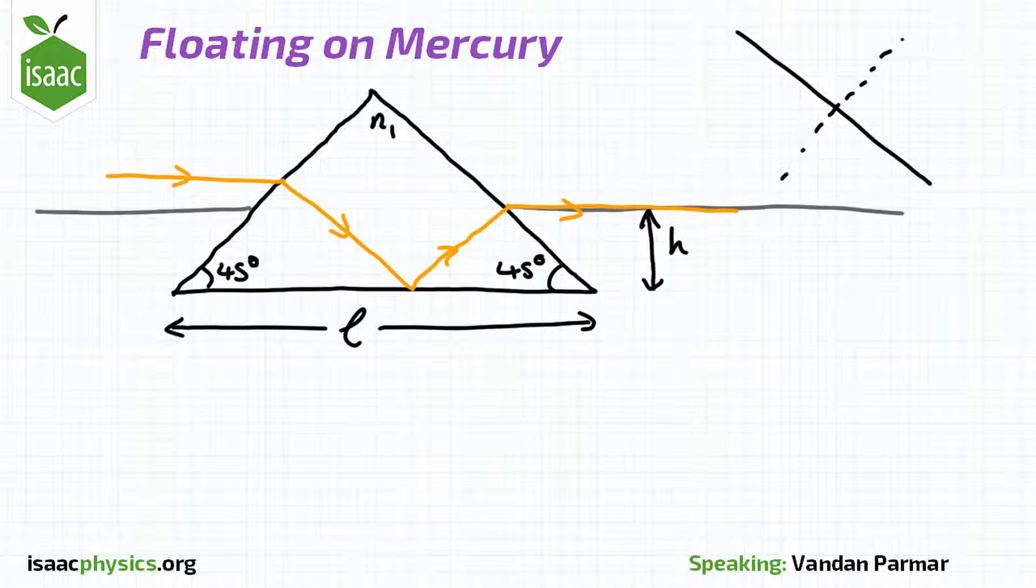We can apply Snell's law at this boundary to find the angle of refraction of this ray. Knowing this angle, we can work out the distance from the edge of the prism that the ray is reflected from the base of the prism. We can let this length be called B.